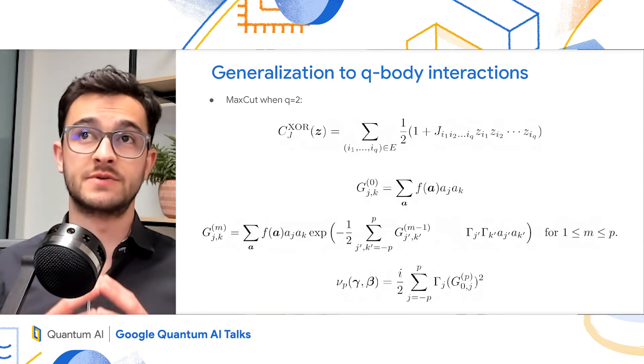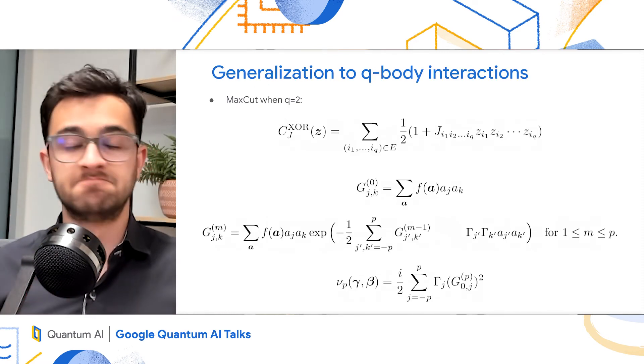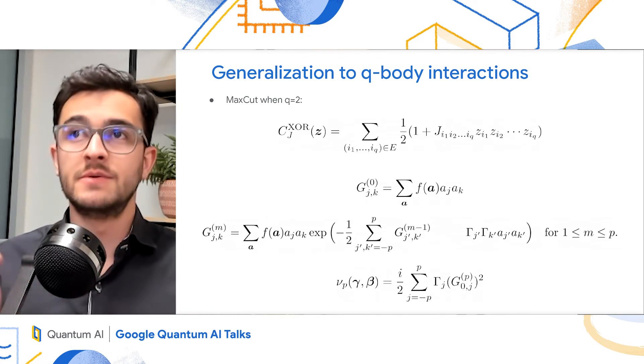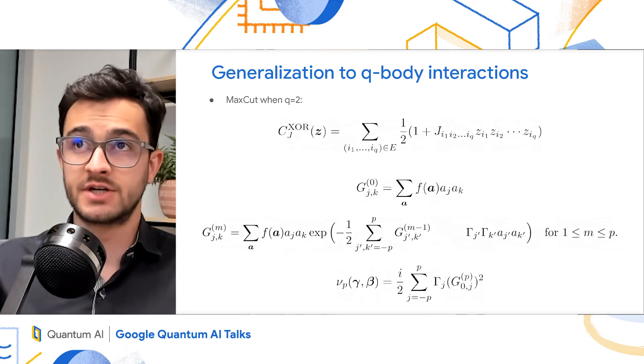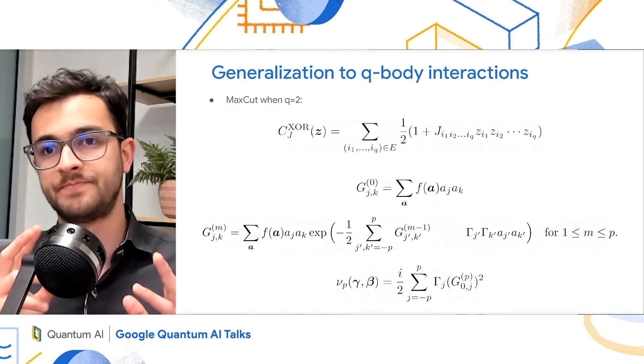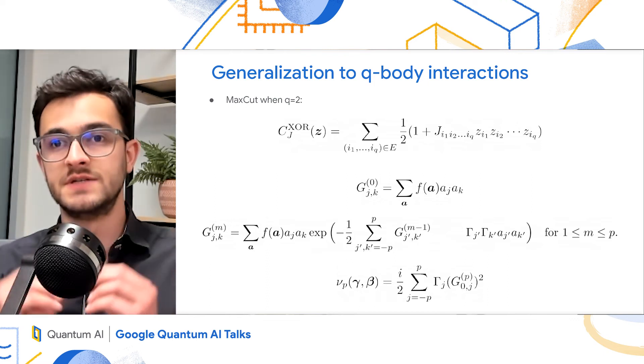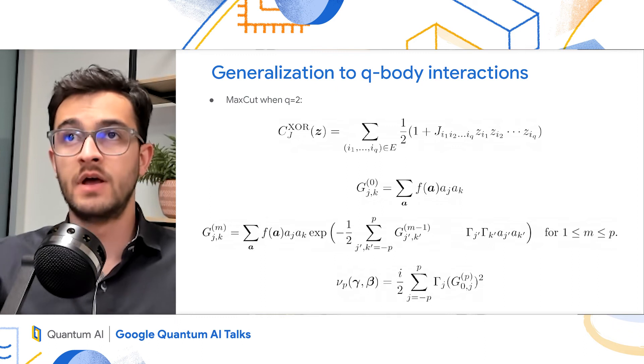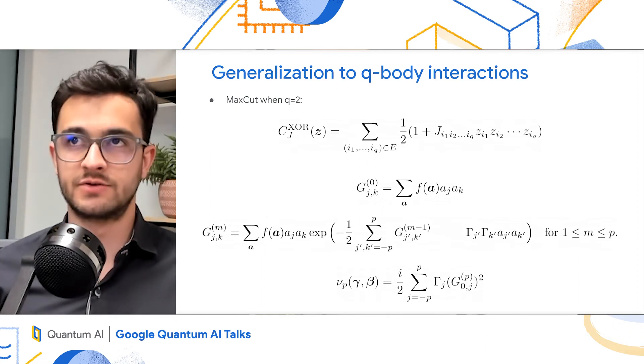Now, we're going to generalize the results to Q-spins. So MaxCut is actually a particular case of the Max-Q-XOR problem, which has the cost function given by the first equation. So instead of having the product of 2 z's, now we have the product of q z's. And now there's this coupling, the j, that can be plus or minus 1. So MaxCut is the case when q equals 2, and all the j's are minus 1.